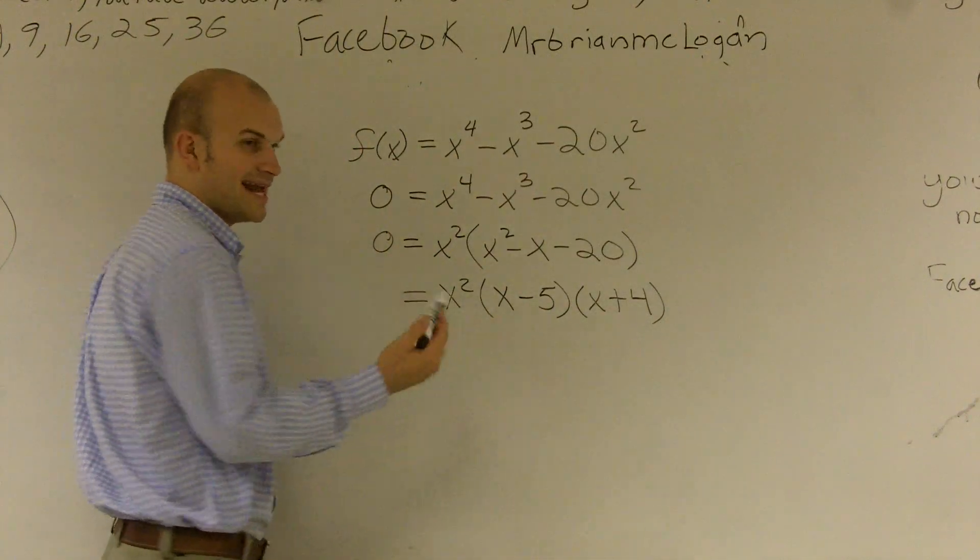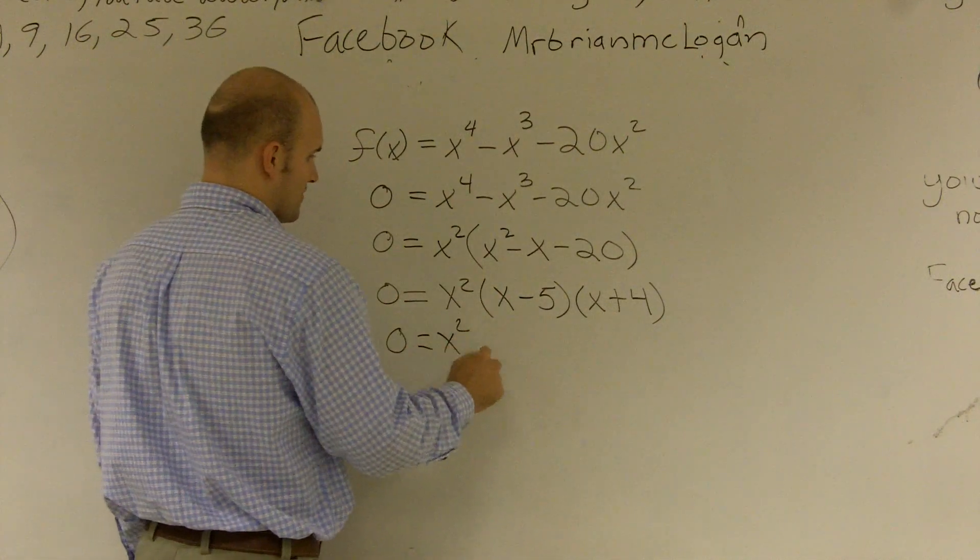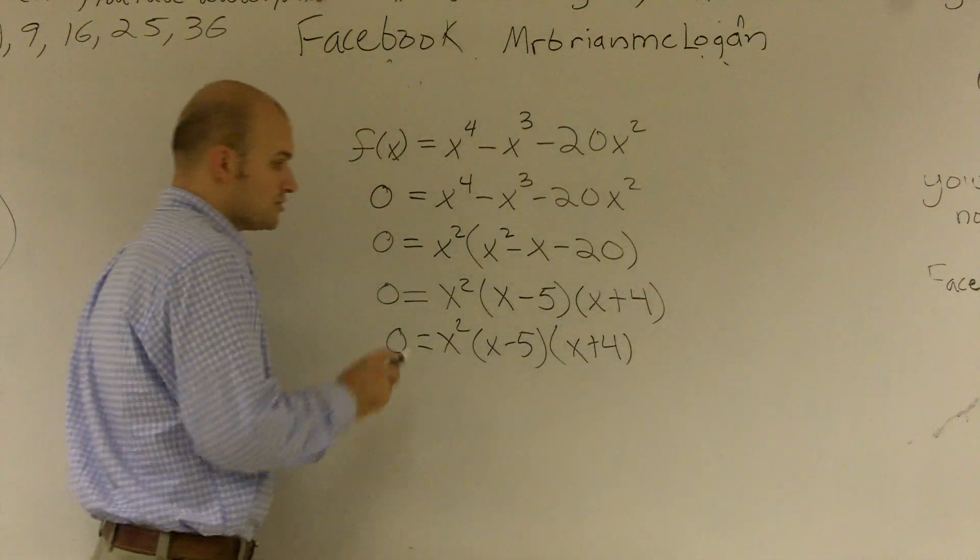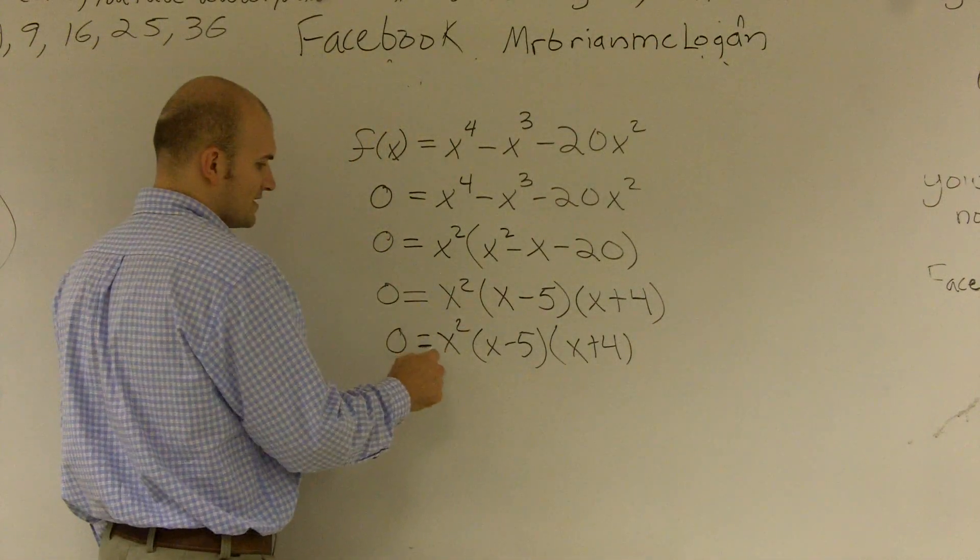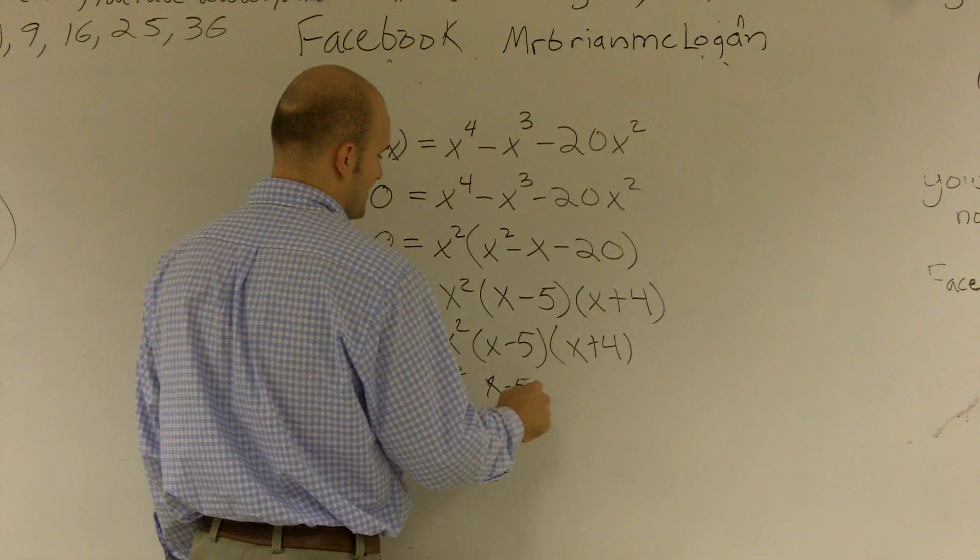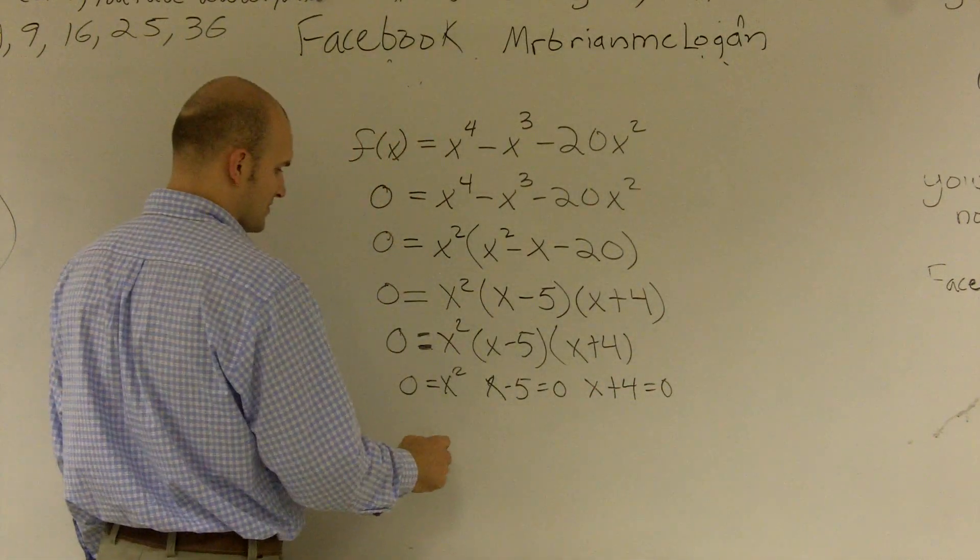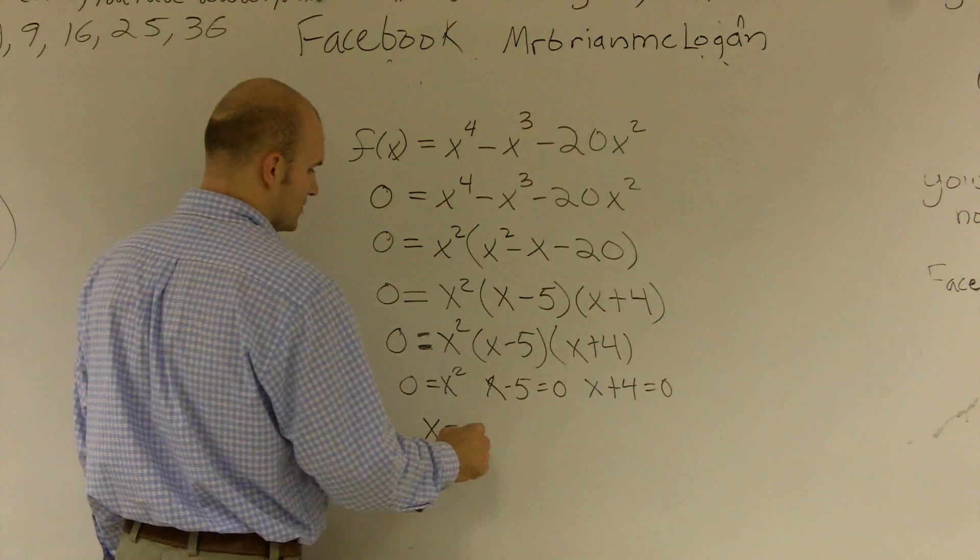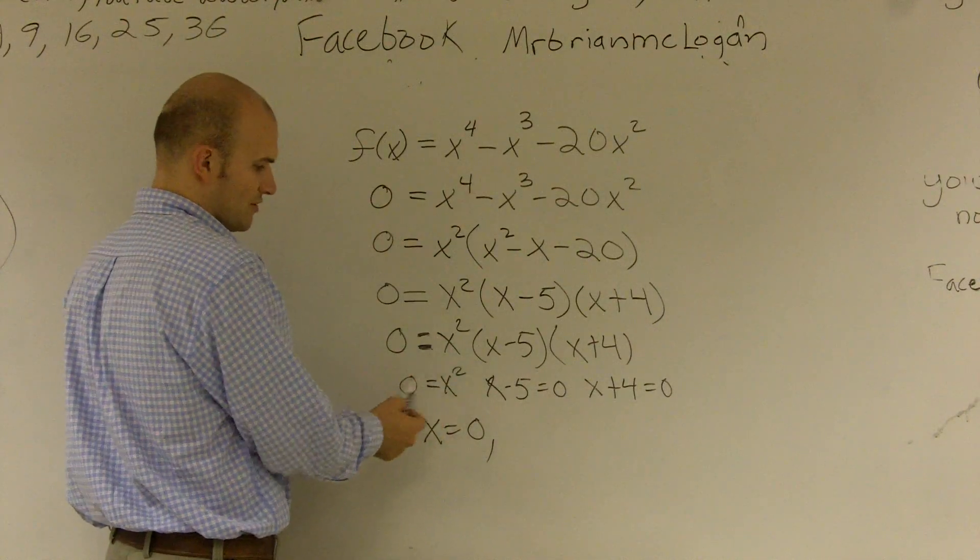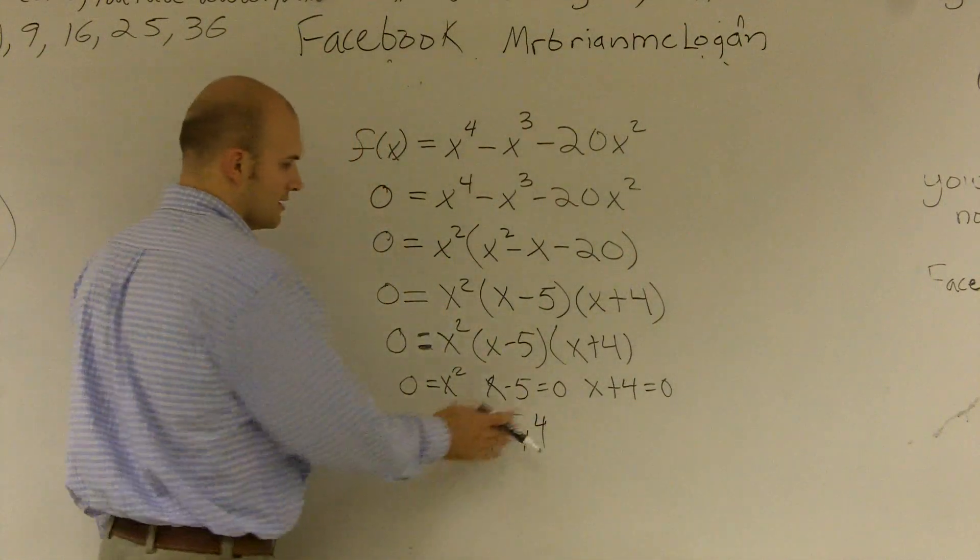So let's get the zeros. Remember I said x times y equals 0? That's the same thing here. 0 equals x squared, x minus 5 equals 0, or x plus 4 is 0. So one of these is going to equal 0. Therefore, my zeros are going to be when x equals 0, because to solve for x, you take the square root and get x equals 0. x is equal to 5, and x is equal to negative 4.